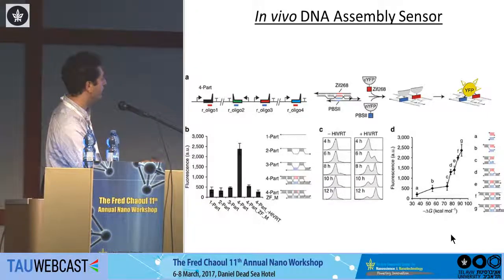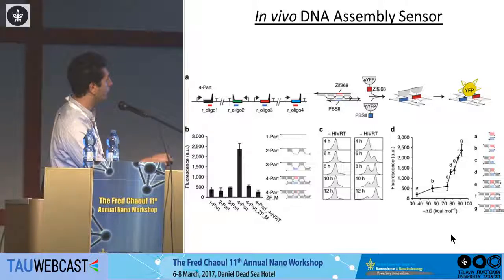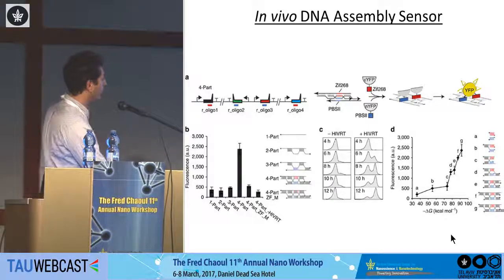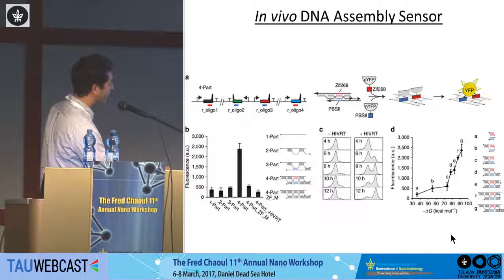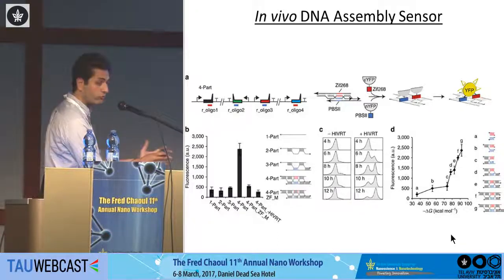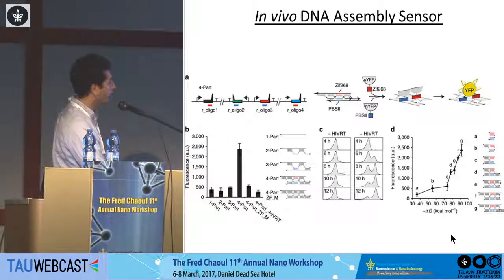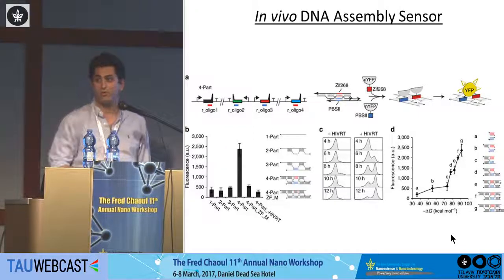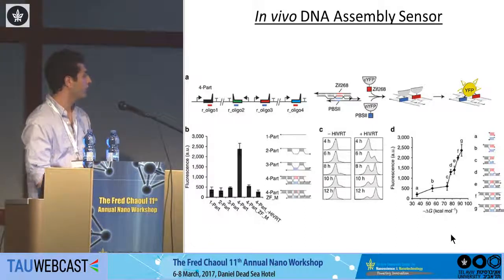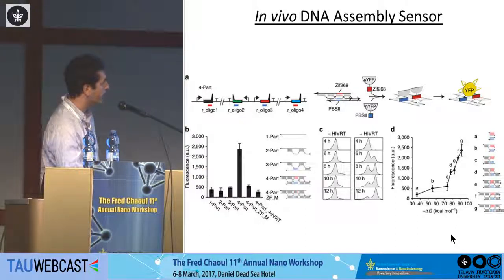One DNA part gives no fluorescence; two DNA assemble but don't create zinc finger proximity — no fluorescence; three DNA create one zinc finger domain but not the second — no fluorescence; only when all four parts are together do they reassemble precisely, bring the YFP fragments into proximity, reconstitute the protein, and give high fluorescence. Mutations on the zinc finger or absence of HIV both abolish fluorescence.